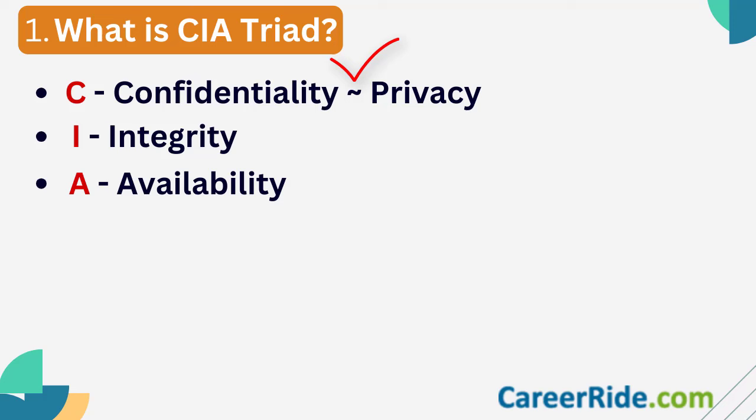I here refers to integrity, which means that the data is trustworthy, whether it is at rest or in transit. It is accurate, reliable and consistent. No tampering happens with the data at any point of time. And A refers to availability, which means the intended users get access to the data whenever they want it.